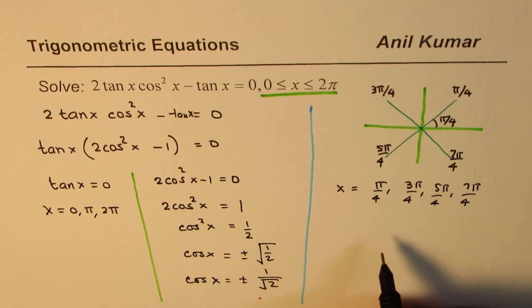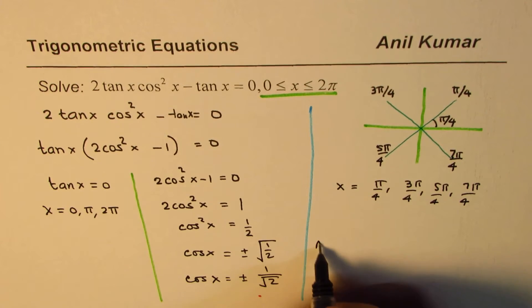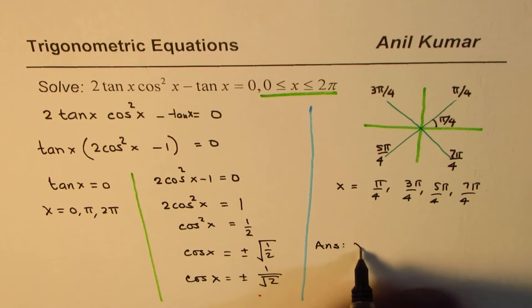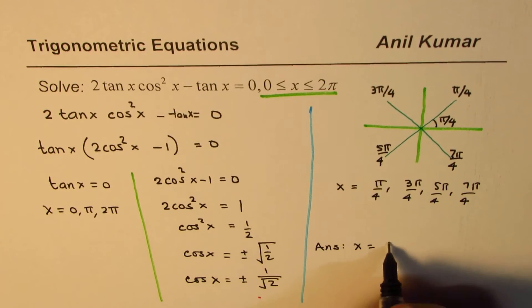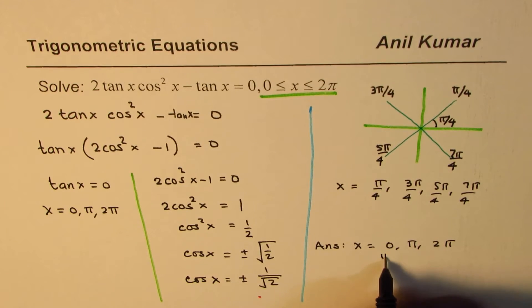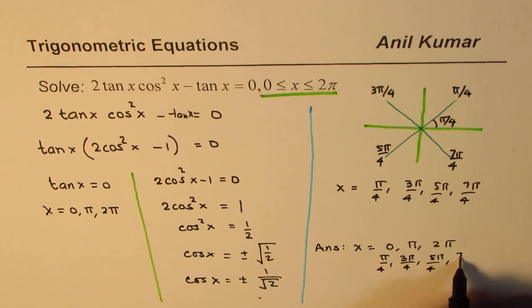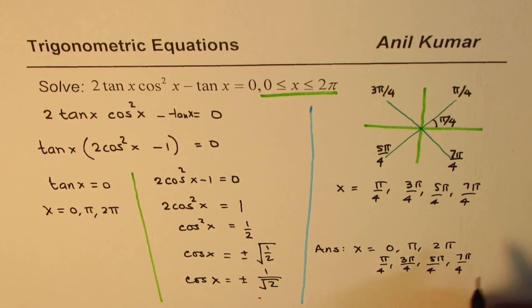Three from the first case plus four from the second gives seven total solutions. We can write down our answer as x equals 0, π, 2π, and π/4, 3π/4, 5π/4, and 7π/4.